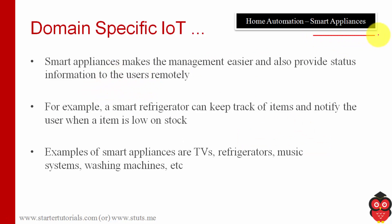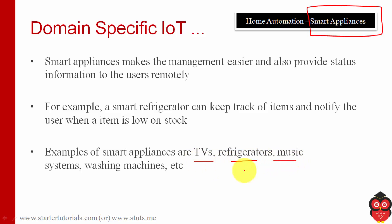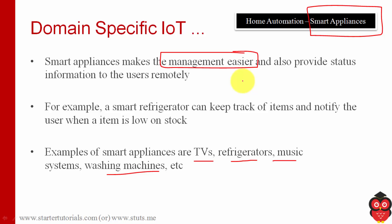Next is smart appliances. Nowadays all appliances and devices are coming with IoT features. Examples of smart appliances are TVs, refrigerators, music systems, washing machines, ACs, and more. Smart appliances make management easier — for example, with a smart washing machine you can set a schedule for when to turn on, turn off, and dry the clothes.